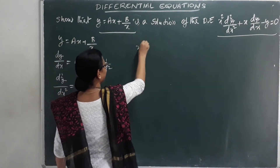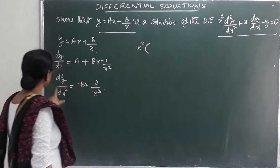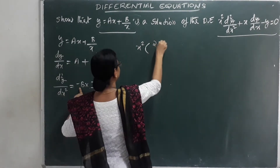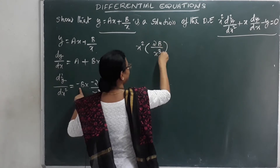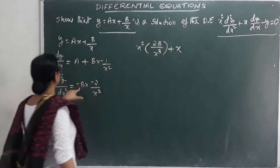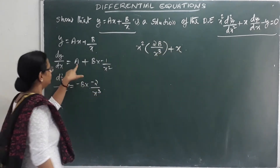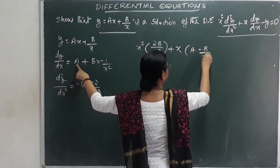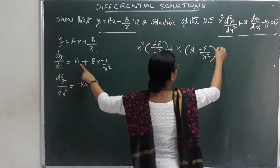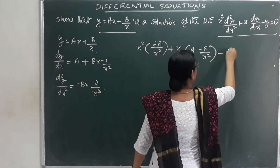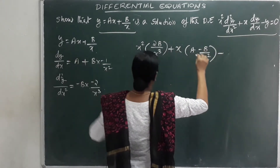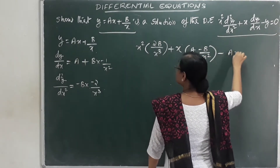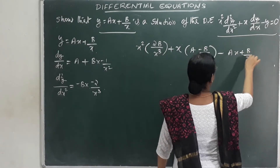Substituting into the equation: x² times the second derivative gives 2b/x, plus x times the first derivative (a − b/x²), minus y, which is ax + b/x.